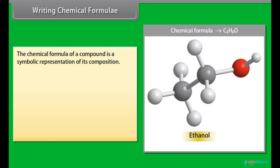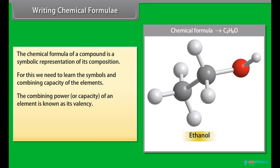Writing Chemical Formulas: The chemical formula of a compound is a symbolic representation of its composition. For this we need to learn the symbols and combining capacity of the elements. The combining power or capacity of an element is known as its valency.